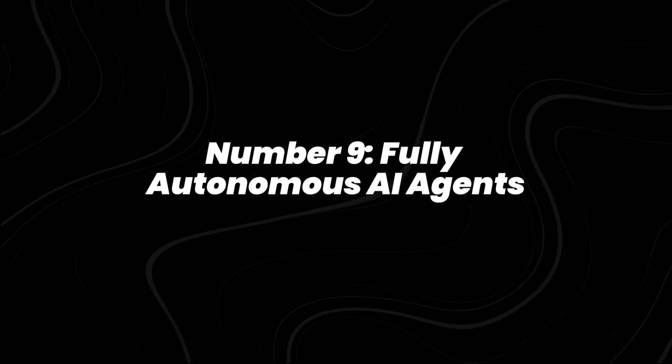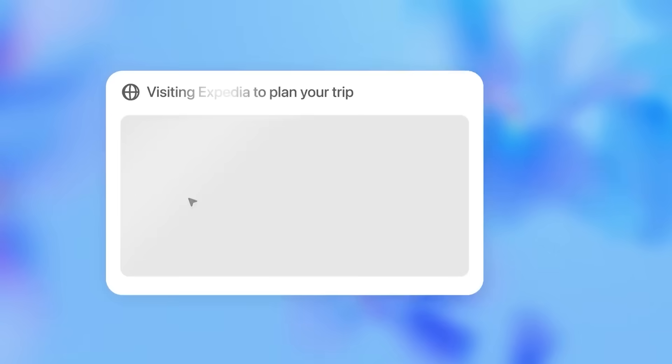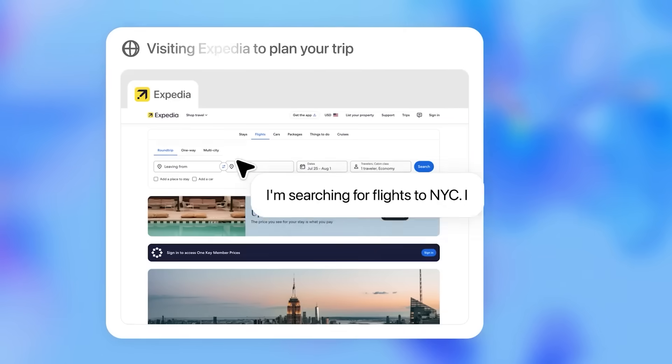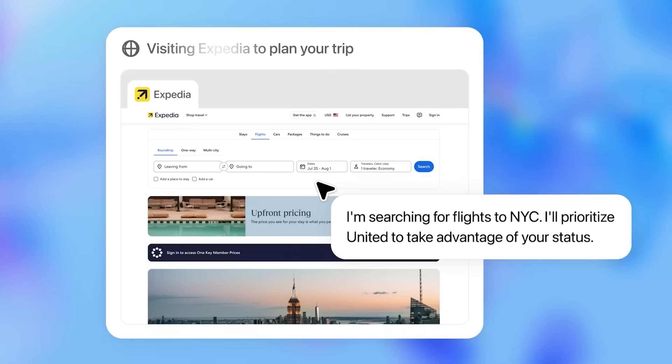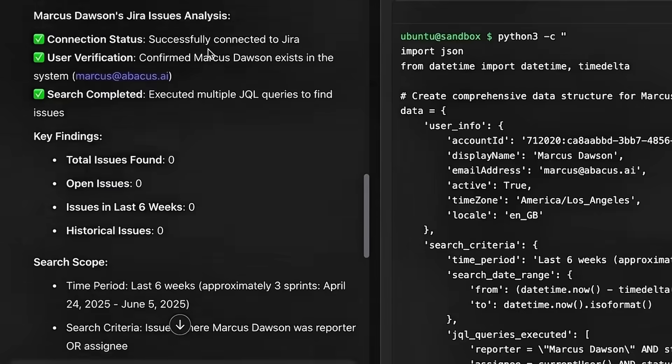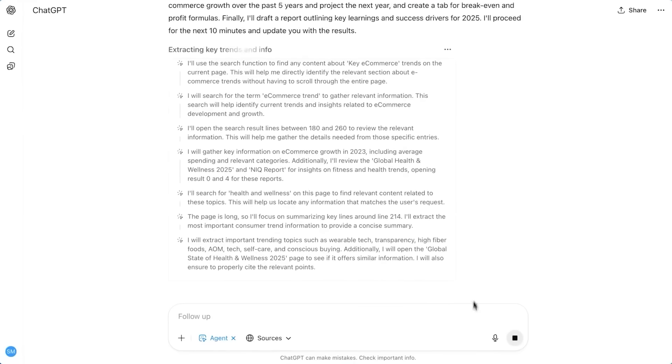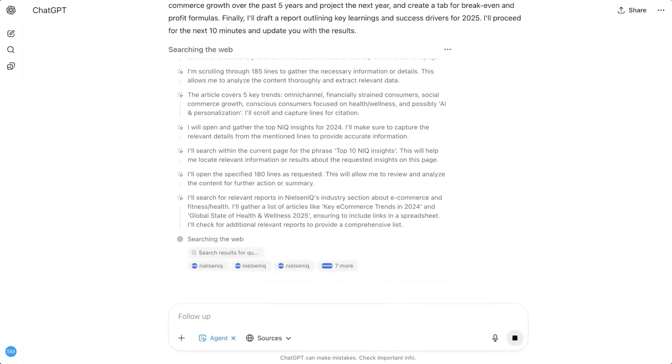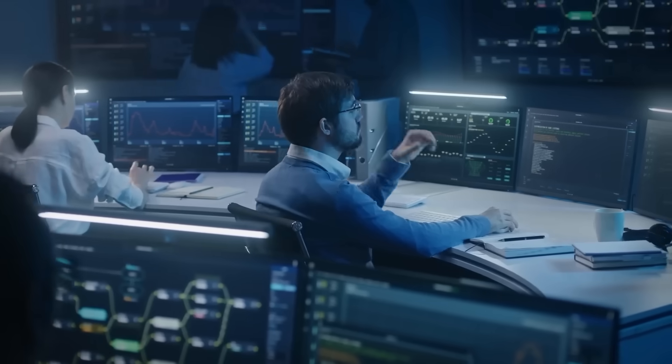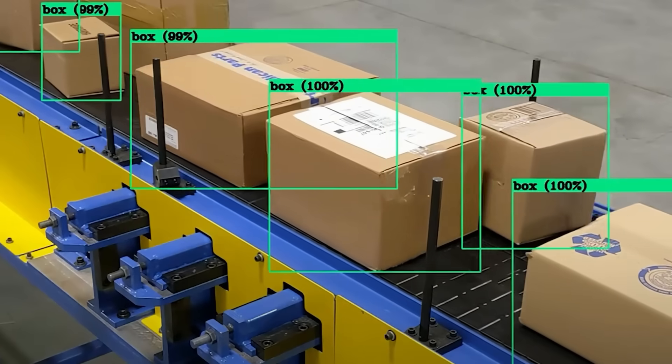Number 9, fully autonomous AI agents. Fully autonomous AI agents are systems that operate without direct human input, setting their own goals and executing them end-to-end. Using natural language interfaces, they can manage research, code software, trade stocks, or oversee supply chains independently.